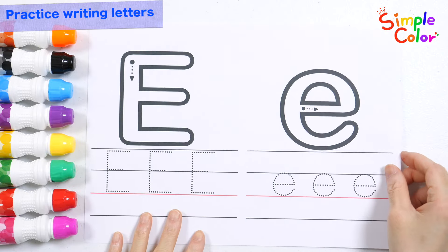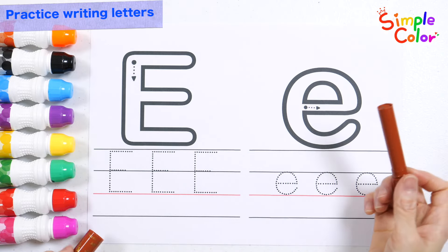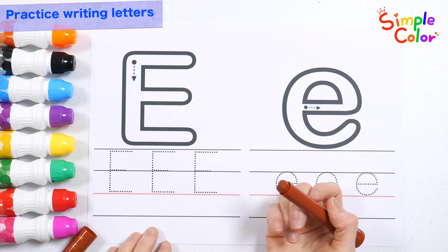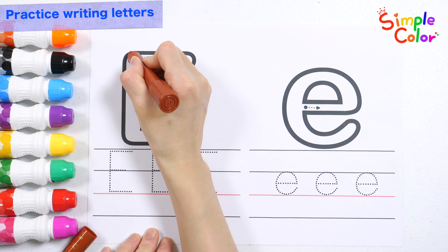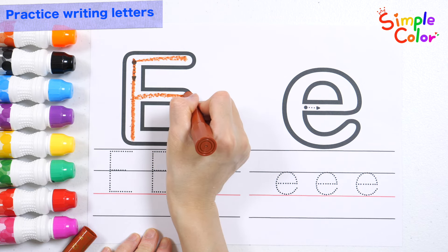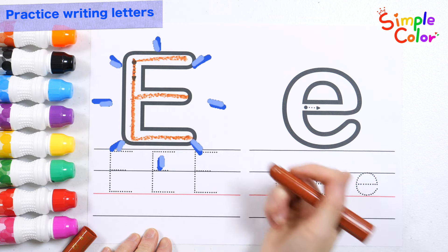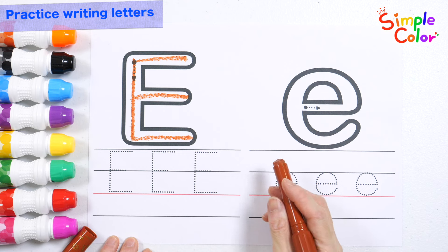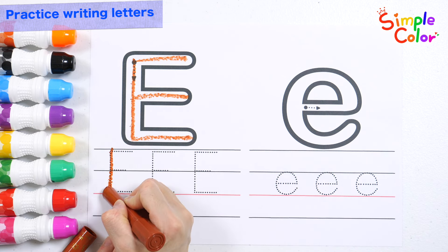Now, let's write the second letter E. Wow! Uppercase E. Trace the dotted lines and practice writing it three times.